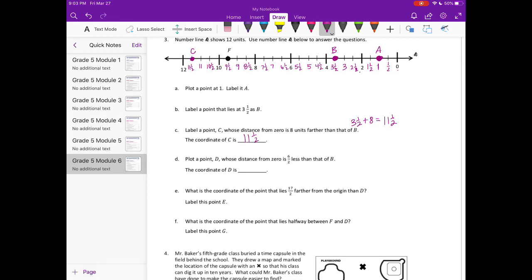Plot a point D whose distance from 0 is 6 halves. 6 halves, 6 divided by 2, that's just 3, less than that of B. So B, again, was 3 and 1 half, and we want 3 less than that. So that's 1 half. So the coordinate of D is 1 half.